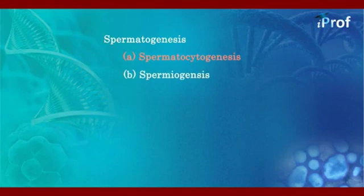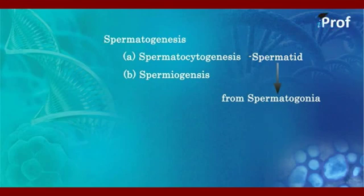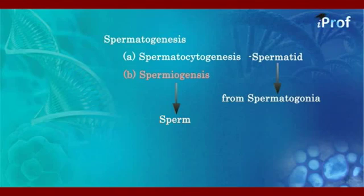Spermatocytogenesis means formation of spermatids from spermatogonia, and formation of sperms from the spermatids is called spermiogenesis, or in other words, spermateleosis.